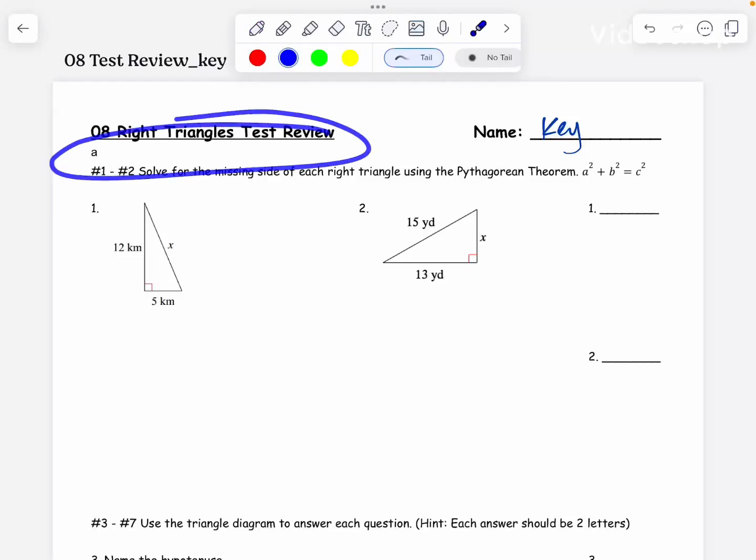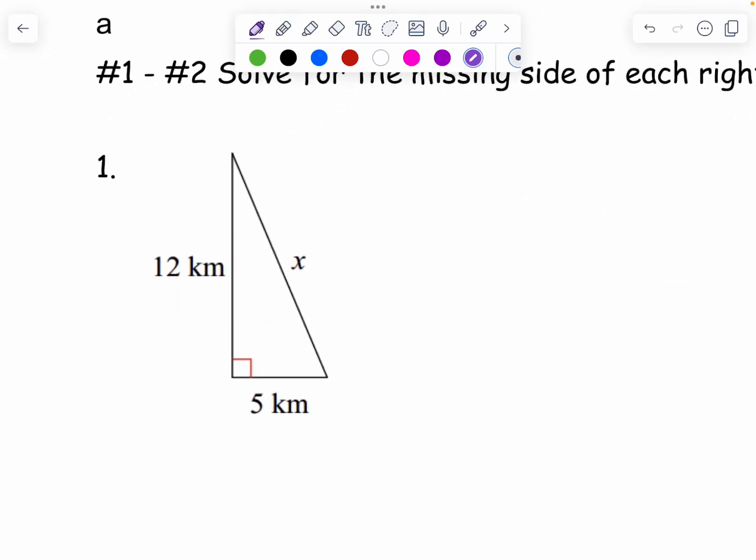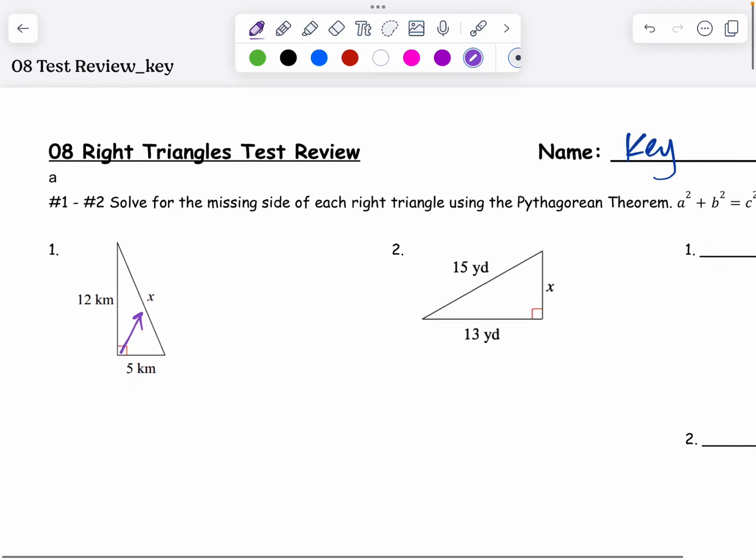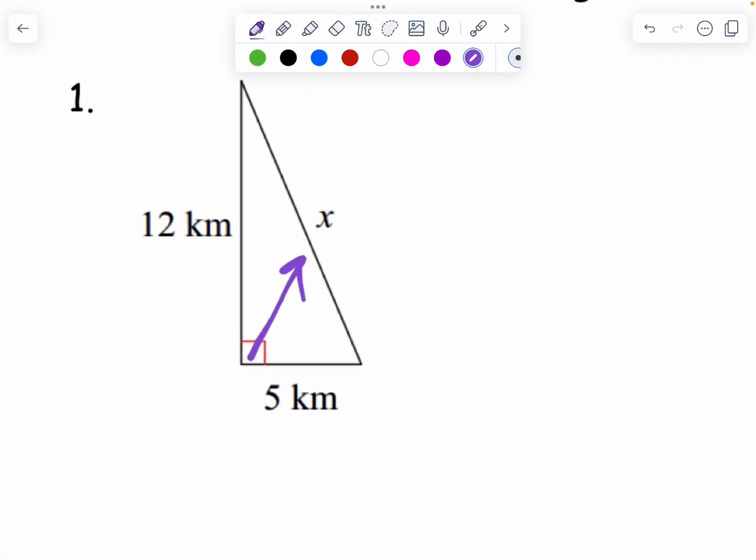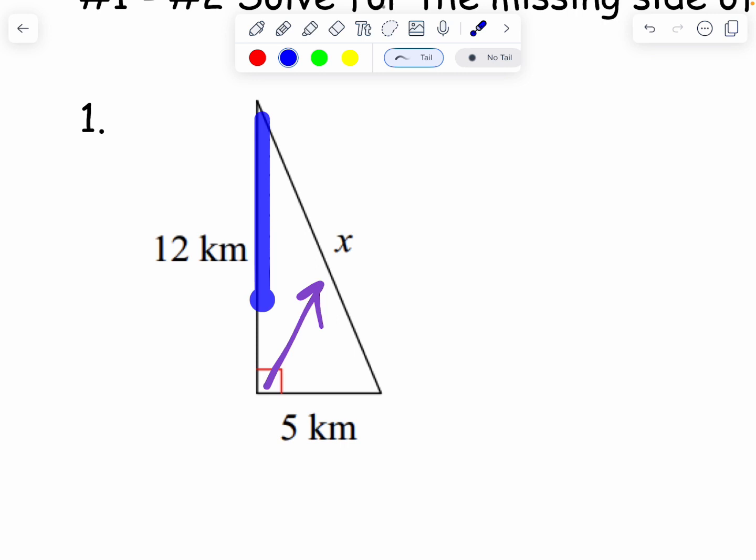All right, this is the chapter 8 test review. I'm going to go through the odds really quick to make sure you know how to do each type, every problem. I am going to first label - oh first of all I should point out the directions here: Pythagorean Theorem, A squared plus B squared equals C squared. We have two of the sides we need to find the third one.